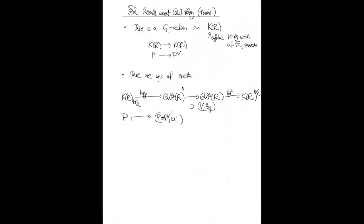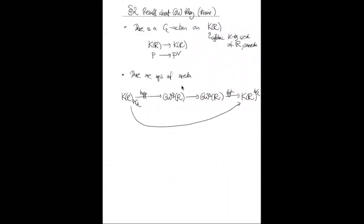Considering the composition from homotopy orbits to homotopy fixed points: this sends P to P ⊕ P*, which is just sending P to P plus the C₂-action on P — that is the norm map from orbits to fixed points, as in classical algebra.